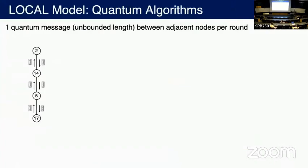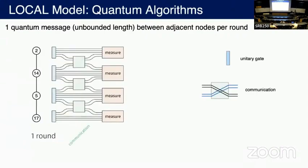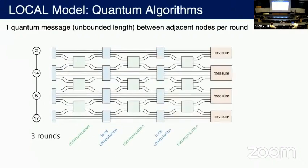Now the quantum local model. The difference is that now we can send one quantum message between adjacent nodes per round, with unbounded message length. We can rewrite a quantum distributed algorithm as a quantum circuit. If you have zero rounds of communication, you simply do local computation and measure. With one round, you have one additional layer representing exchange of quantum registers, then measure. With two rounds, two additional layers, and with three rounds, three additional layers.